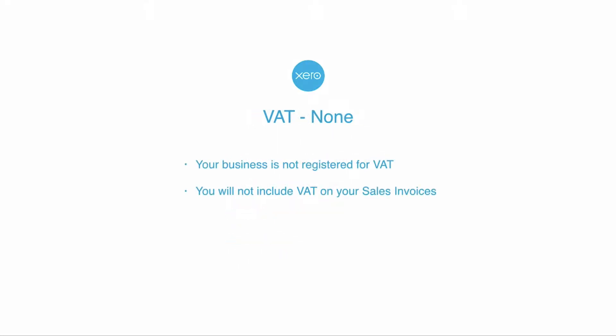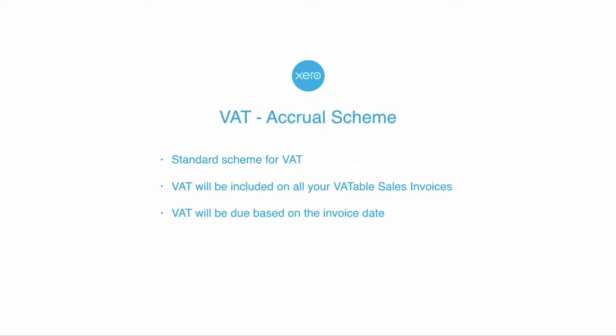The easiest one is if you need to set up VAT as none. That would be if your business is not VAT registered — in other words, your sales invoices will have no VAT included in them. Second up, we have the VAT accrual scheme. Don't get confused by the word accrual, which is an accounting term. This is the standard scheme for VAT. If you register for VAT and don't choose any of the unusual schemes, this is the scheme you will be on. Every time you issue a sales invoice for standard UK sales, you will add VAT to your sales invoices.